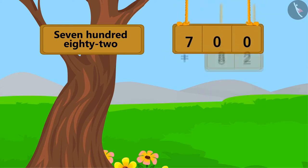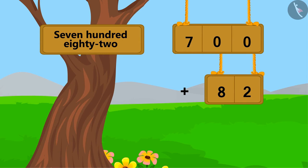we can write it like this by adding 82 to 700. We can also write 82 by adding 2 to 80 like this.